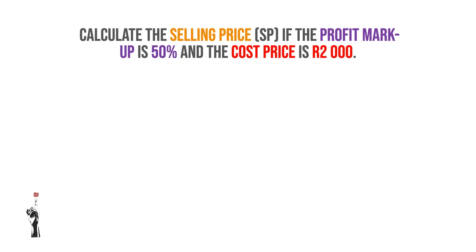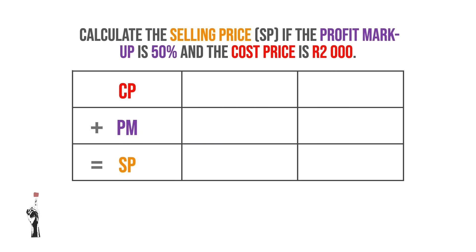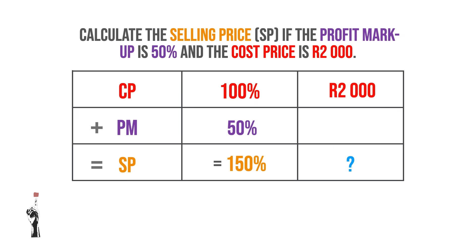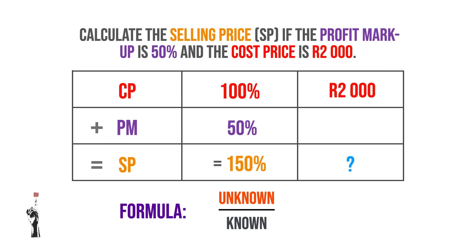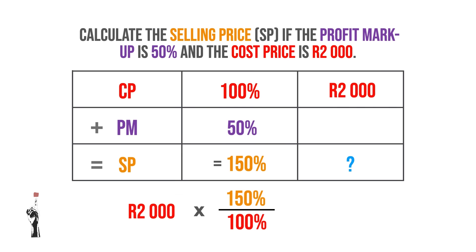Next, calculate the selling price if the profit markup is 50% and the cost price is R2,000. Start by drawing the grid: cost price percentage is 100%, profit markup is 50%, so the selling price percentage is 100% + 50% = 150%. The known cost price is R2,000. Take the unknown (150%) and divide by the known (100%): R2,000 × 150 ÷ 100 = R3,000. The selling price is R3,000.